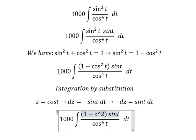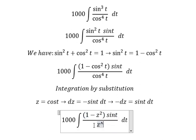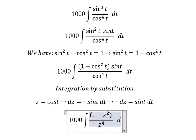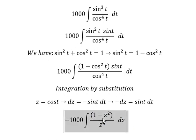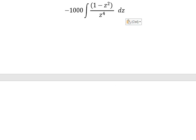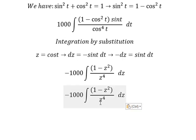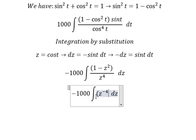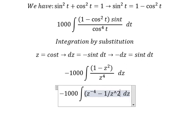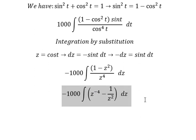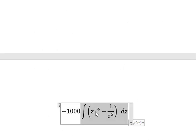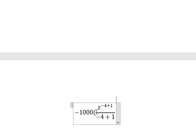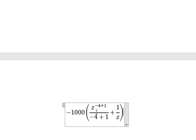So we have z² for the sin²(t) term and z⁴ for the cos⁴(t) term. We replace sin(t) dt with -dz. After simplification, we have 1/z⁴ and z²/z⁴. Integrating z to the power of -4: we get (-4 + 1) / (-4 + 1), and the next term gives 1/z, plus constant C. This simplifies to the power of -3.